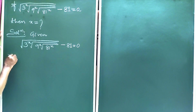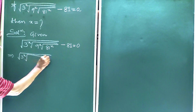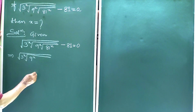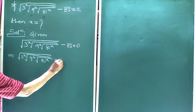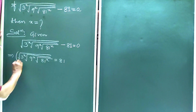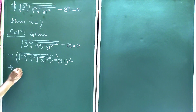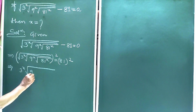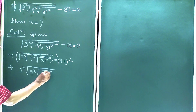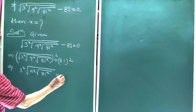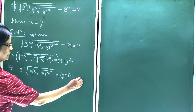So we can write this implies 3 to the power x, under root over root over whole 9 to the power x, again under root over root over whole 81 to the power x is equal to 81. Now squaring both sides, we get 3 to the power x, root over whole 9 to the power x, under root over root over whole 81 to the power x, is equal to 3 to the power 4 squared, which is equal to 3 to the power 8.